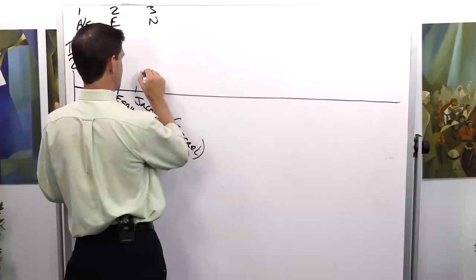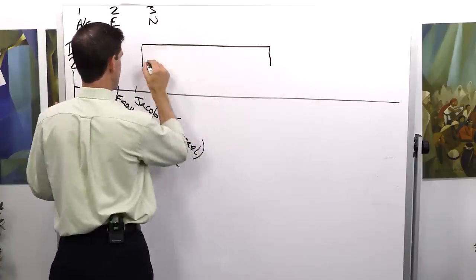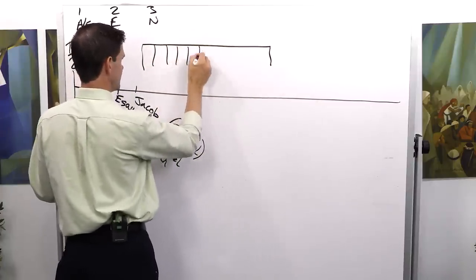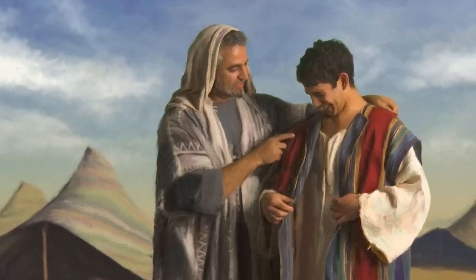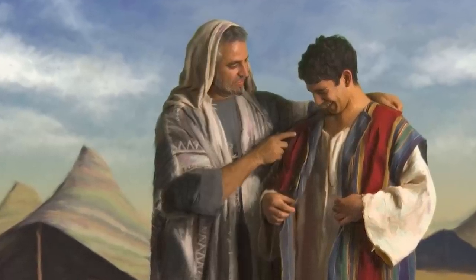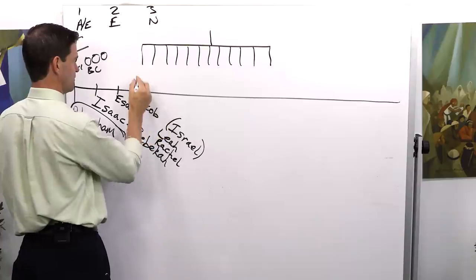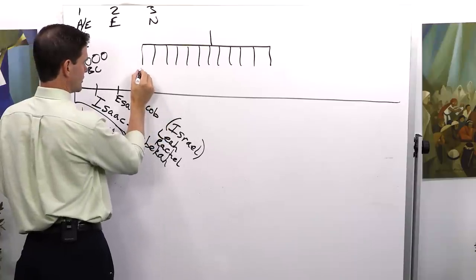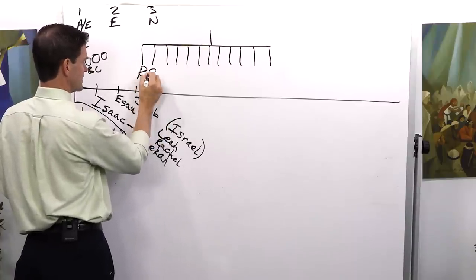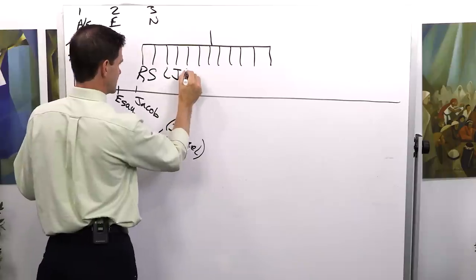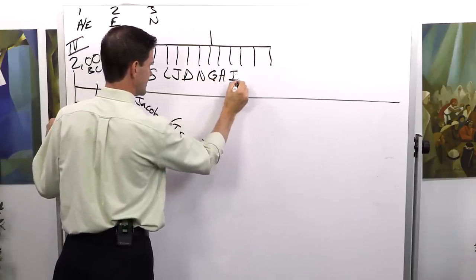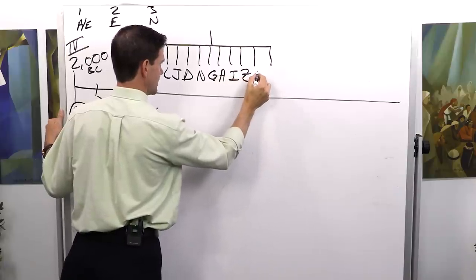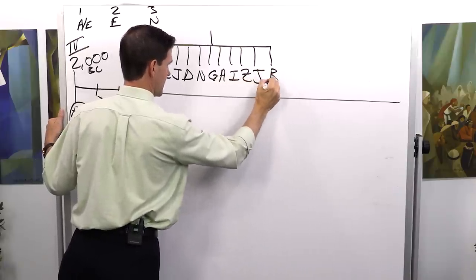So you have the twelve tribes of Israel, the twelve sons of Jacob. You have the oldest, down to the youngest, Reuben, Simeon, Levi, Judah, Dan, Naphtali, Gad, Asher, Issachar, Zebulon, Joseph, Benjamin. Now, watch how this works. Leah was the first to have children, and she has the first four. Rachel's pretty frustrated with this, because she's not able to conceive and bear any children.